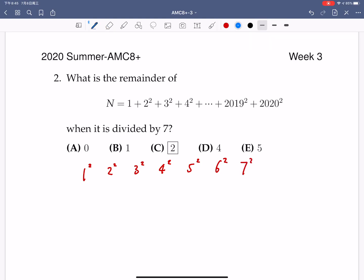When these numbers divided by 7, for the first one, the remainder is 1. The second one remainder is 4. 3 square is 9, is 7 plus 2, so the remainder is 2. 4 square is 16, so it's 14 plus 2, the remainder is 2 again. 5 square is 21 plus 4, so the remainder is 4. 6 square is 35 plus 1, so the remainder is 1. 7 square is divisible by 7, so the remainder is 0.